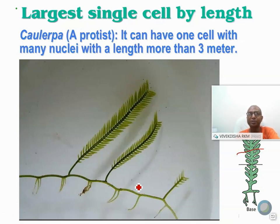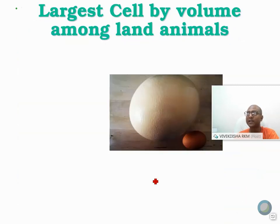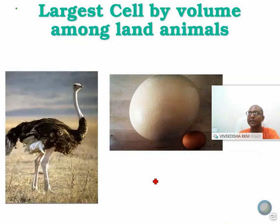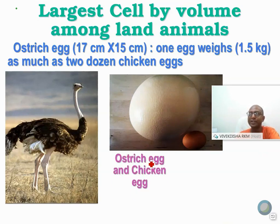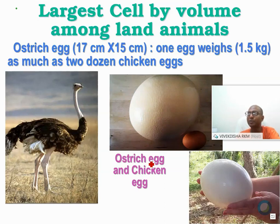We can also consider largest cell by volume. The largest single cell by volume among land animals is the ostrich egg. Your book may mention it as the largest cell by volume in the entire living organism, but that is not entirely correct. The ostrich egg is the largest cell by volume among land animals only. It weighs about 1.5 kg — not easy to hold in a single palm.